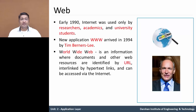The World Wide Web's actual definition is: it is an information space where documents and other web resources are identified by URL — Uniform Resource Locator. For example, whenever you enter www.google.com in the address bar of a browser, that is a URL, which is interlinked by hypertext links and can be accessed via the internet.